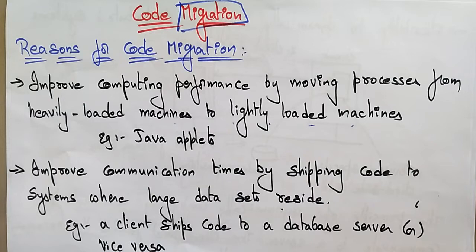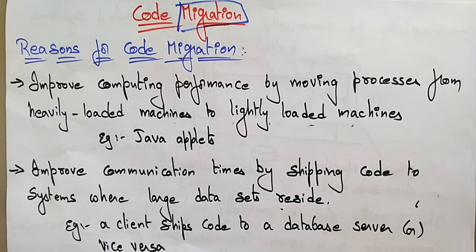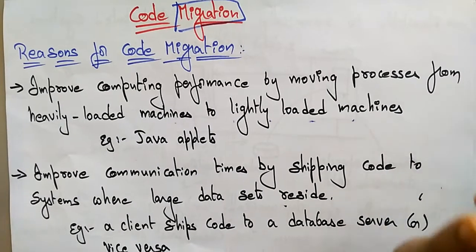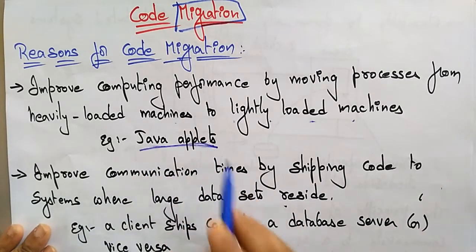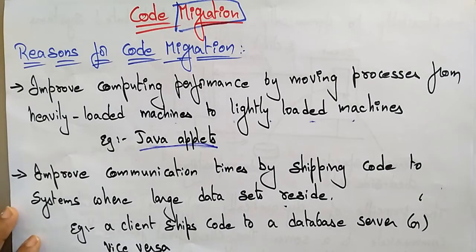If some code is placed on heavily loaded machines and you want to work on lightweight machines rather than heavy machines, you can migrate that code from heavy to lightly loaded machines by installing some software. An example of this is Java applets, which run on lightly loaded machines.